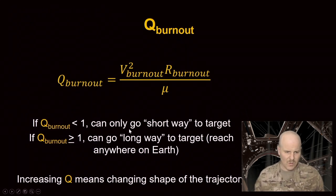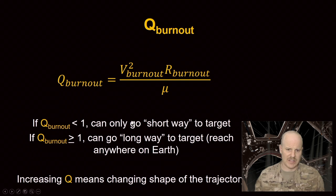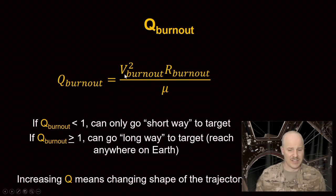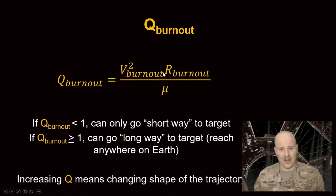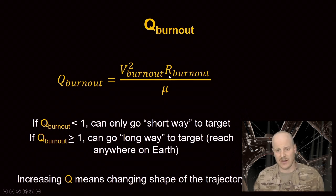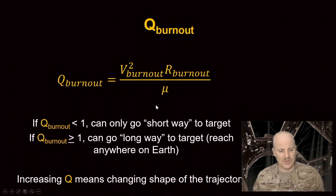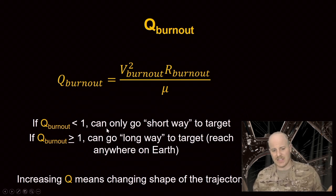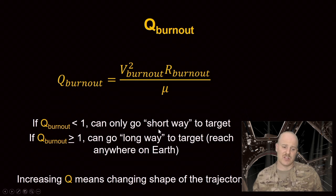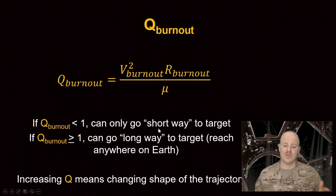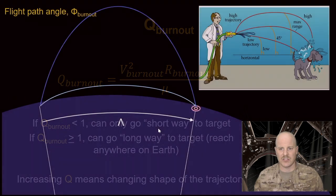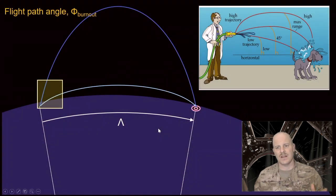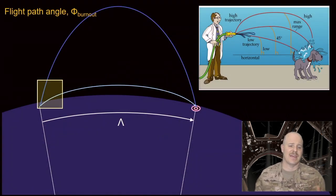Q burnout is related to our V burnout — our velocity at burnout — and our R at burnout, which is our position from the center of the earth to wherever our rocket is at when it reaches max altitude, over mu of the earth. If Q burnout is less than one, you can only go the short way. If Q burnout is greater than or equal to one, you can reach anywhere on earth. Increasing Q changes the shape of your trajectory.